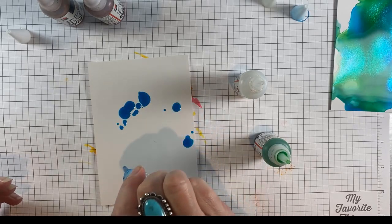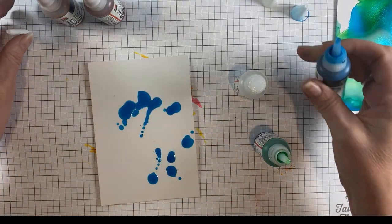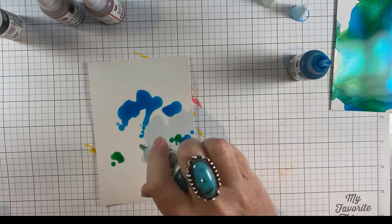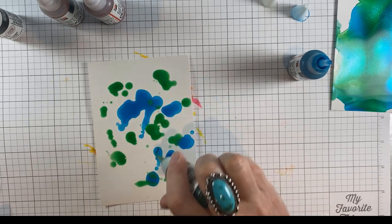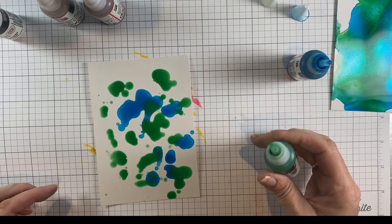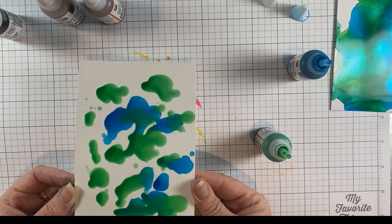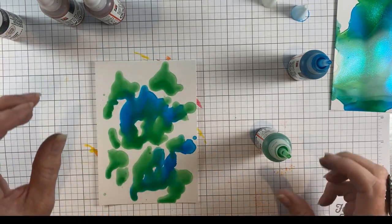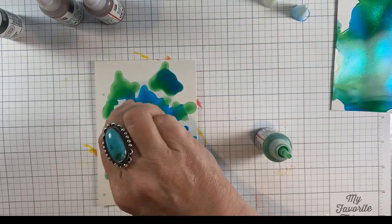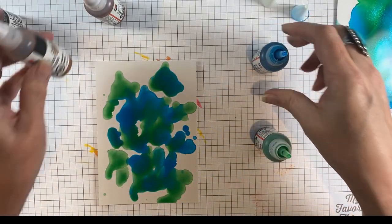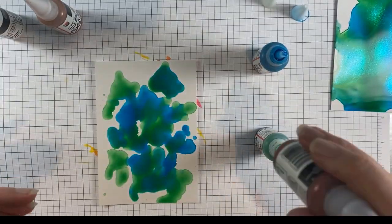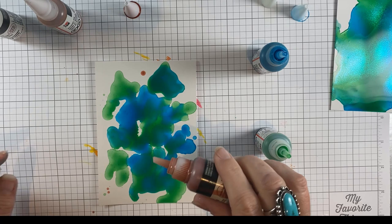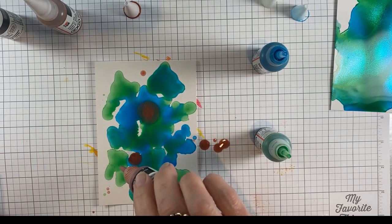They do have metallic mixatives as well. If you're familiar with any alcohol ink, you'll know that you can make things that look like geodes or stones with these metallic mixatives for alcohol ink. So I wanted to show you the copper one. Copper everything is my favorite metallic, so I will do the same two colors. There is a full range of colors. I'll link you to the whole line below.